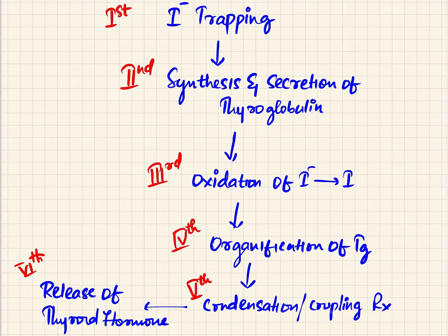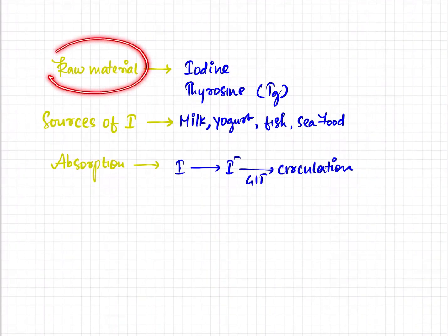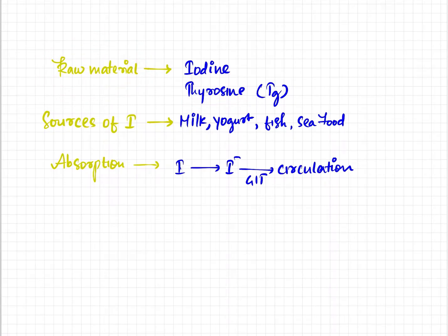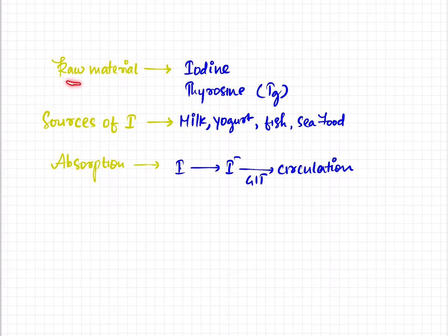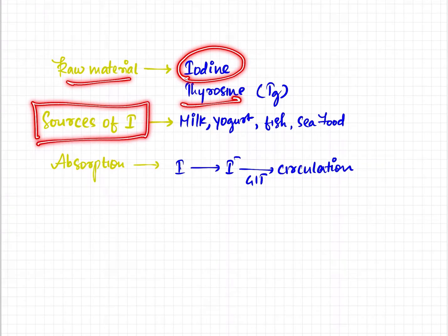There are many steps in the synthesis of the thyroid hormones. The raw materials required for thyroid hormone synthesis are iodine and tyrosine. The tyrosine is present in thyroglobulin — the colloid contains thyroglobulin, which is a glycoprotein having 123 tyrosine residues, making it the source of tyrosine.